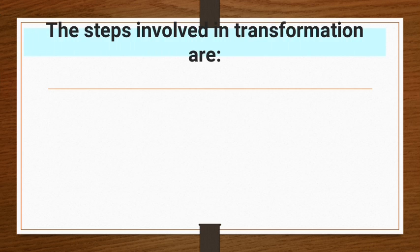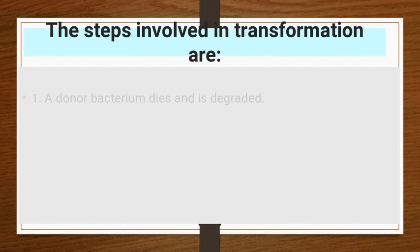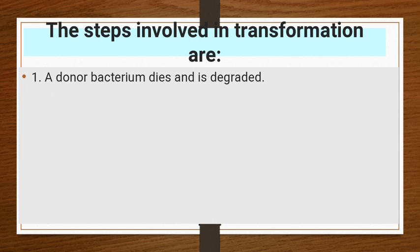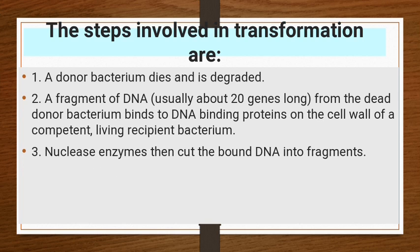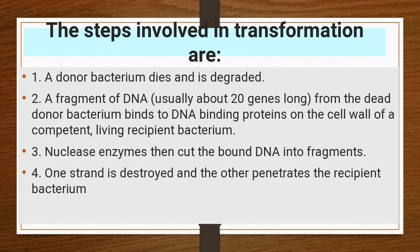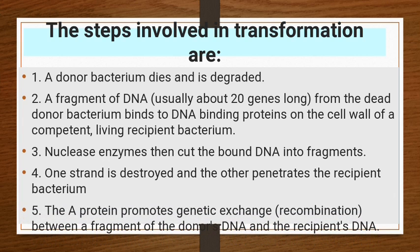The steps involved in transformation are: first, a donor bacterium dies and is degraded. A fragment of DNA from the dead donor bacterium binds to DNA-binding proteins on the cell wall of a competent living recipient bacterium. Nuclease enzymes then cut the bound DNA into fragments. One strand is destroyed and the other penetrates the recipient bacterium. The protein then promotes genetic exchange between fragments of the donor DNA and the recipient.